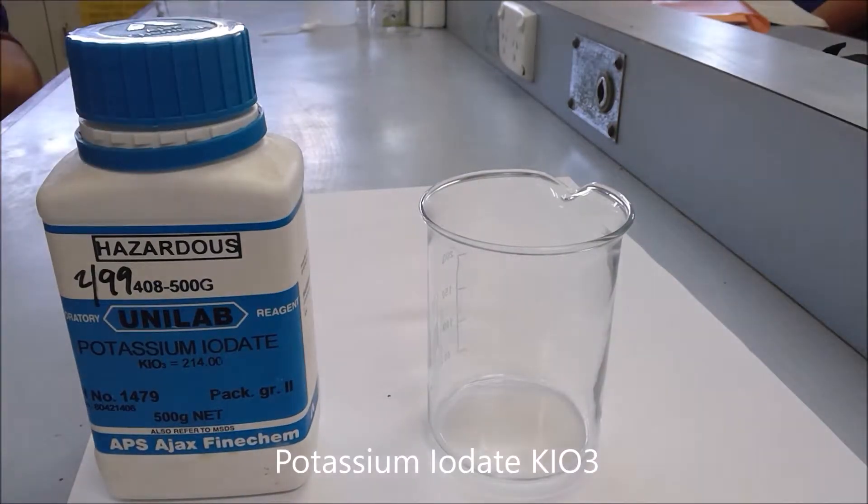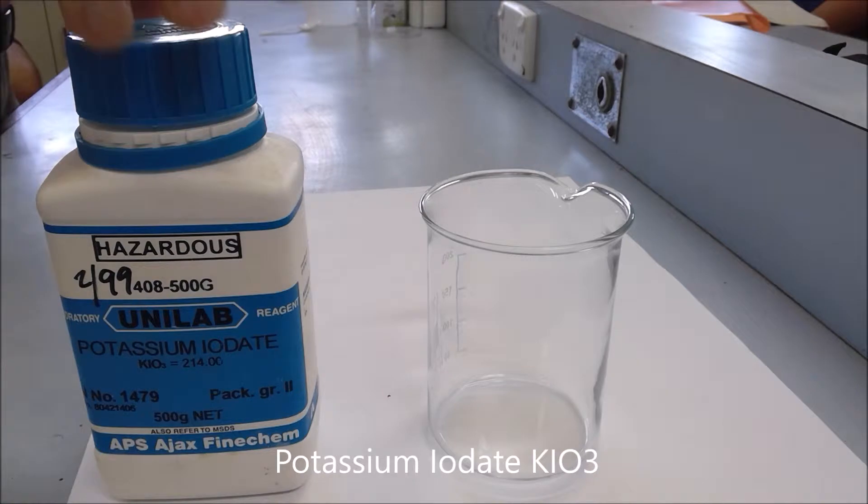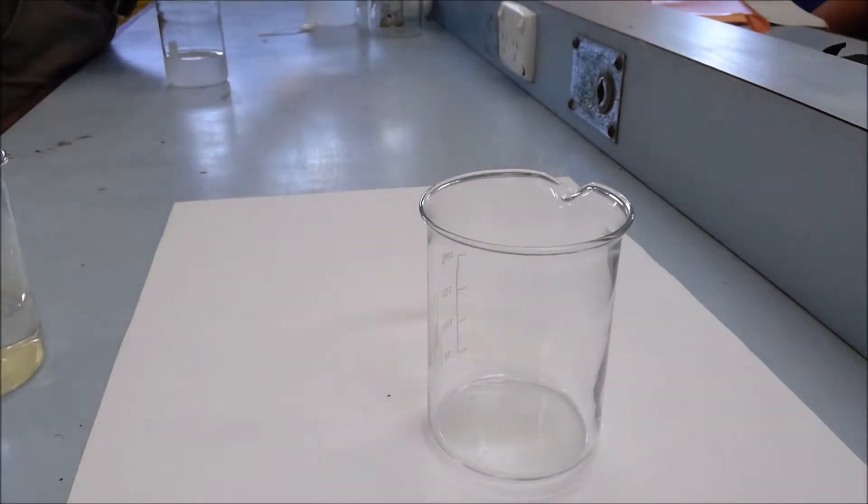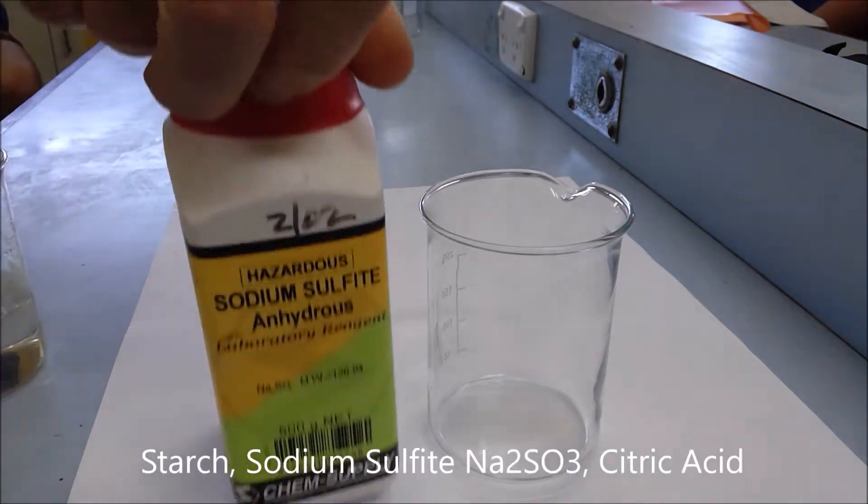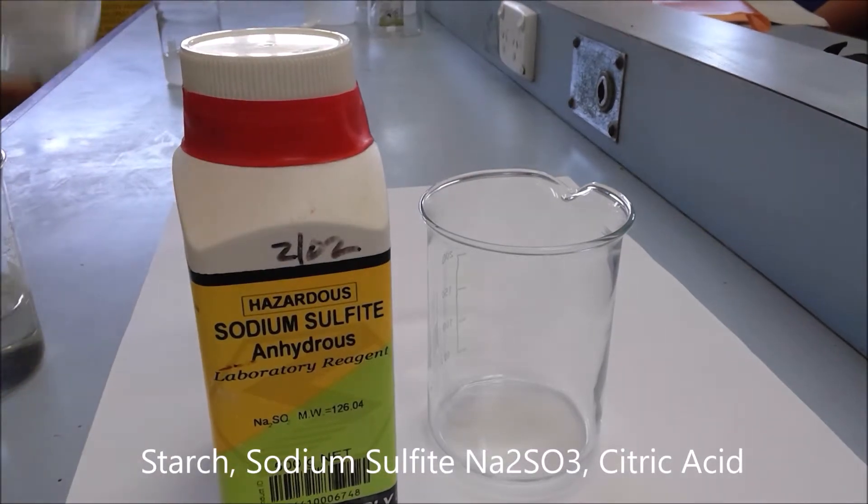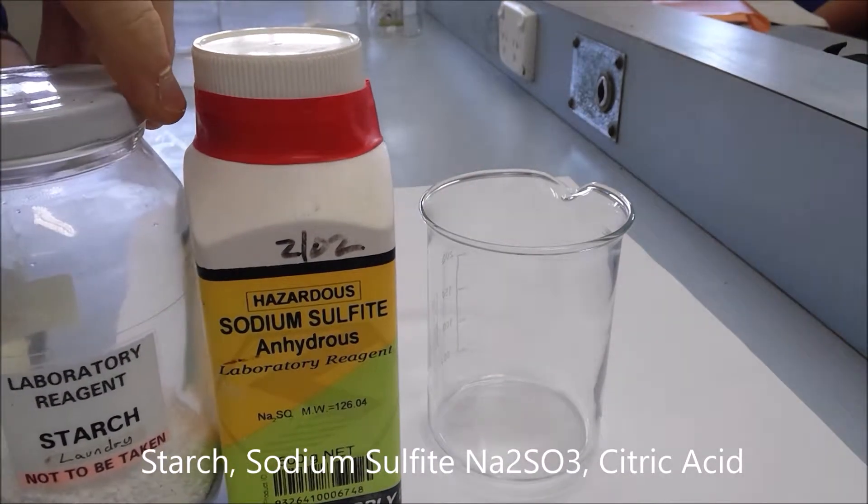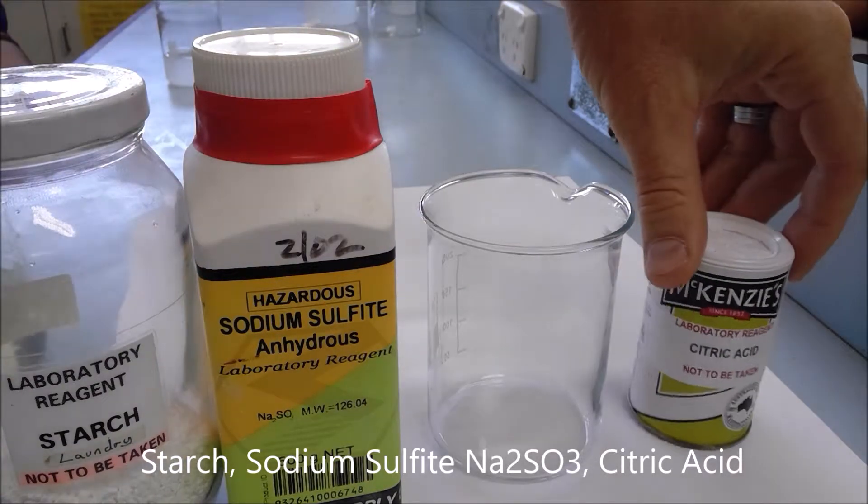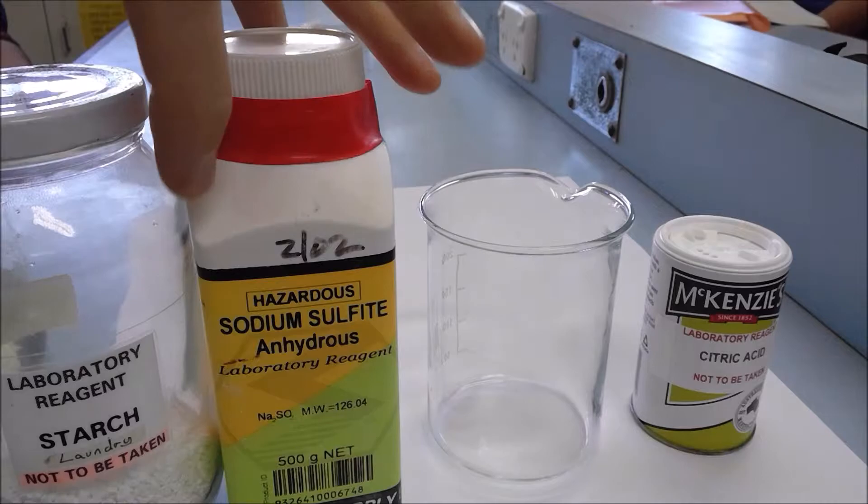So this is the Egyptian Night experiment. It requires two solutions: one potassium iodate, and then a second solution which is starch, sodium sulfite, and citric acid. And then you grab those two solutions and